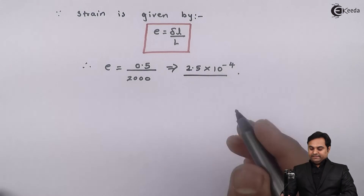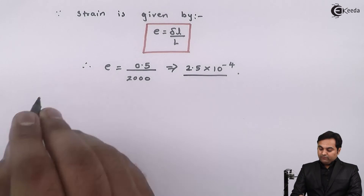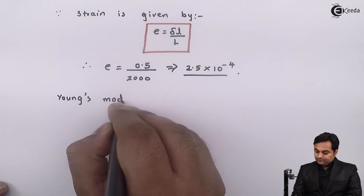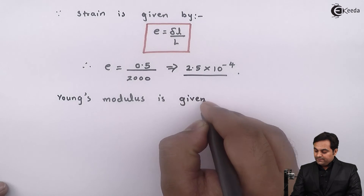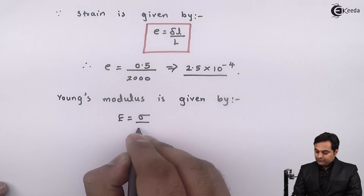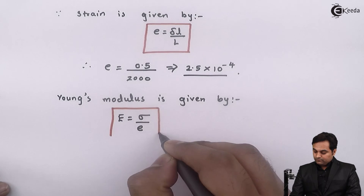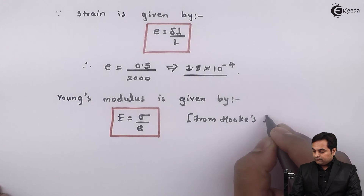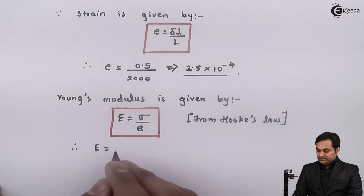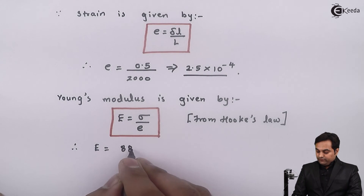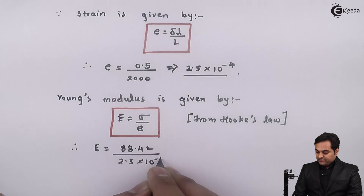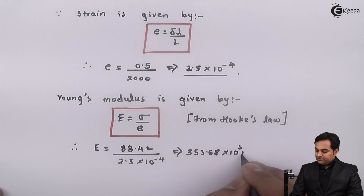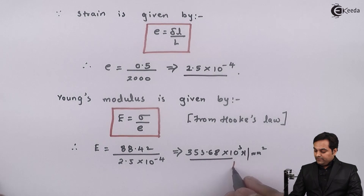Using the formula from Hooke's law, Young's modulus E is equal to stress upon strain. Therefore capital E equals 88.42 divided by 2.5 into 10 raised to minus 4, which gives capital E equal to 353.68 into 10 raised to 3 Newton per mm squared. This is the second answer.